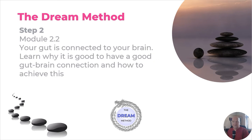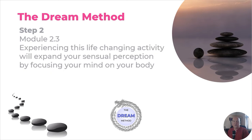Module 2.2 covers the gut-brain connection — why it is good and how to achieve it. This connection runs through the vagus nerve, and actually 95% of the information travels up the vagus nerve to the brain, rather than the brain telling the vagus nerve what to do. This is where your gut instincts come from. Module 2.3 is an experiencing a life-changing activity that will expand your perception by focusing your mind on your body. You'll start to realise that your mind and body are connected and yearn to be connected. It is a paradigm change.